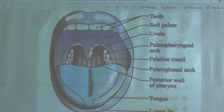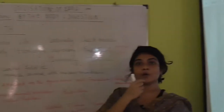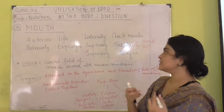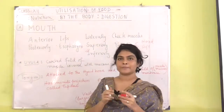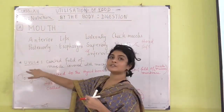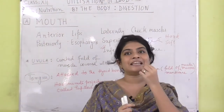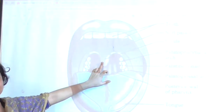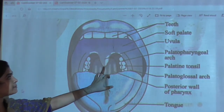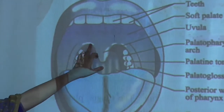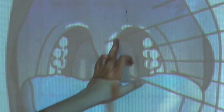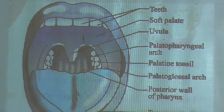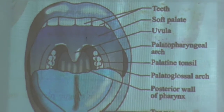The inferior part of the mouth contains the tongue. Another thing we should remember is the uvula. The uvula is basically a fold of muscle — a carved fold of muscles — and it is lined by mucous membrane.